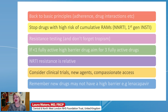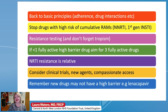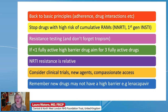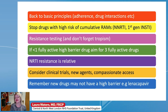Later lines of failure: back to basics — adherence, drug interactions, and all the things covered in early failure. Stop drugs with a high risk of cumulative resistance, limiting further resistance development that may impact later drugs in those classes, particularly NNRTIs and first-generation integrases. Resistance testing, considering tropism and whether maraviroc might be useful. If somebody has less than one fully active high-barrier drug, aim for three fully active drugs in the regimen. Remember NRTI resistance is relative and people can do very well on two NRTIs and a high-barrier drug even with quite extensive NRTI resistance. Consider trials, novel agents, and compassionate access — but remember new drugs might not have high barriers. Lenacapavir, for example, yields impressive results in highly treatment-experienced people but appears to have a relatively low barrier to resistance, so you may need to use two investigational drugs.